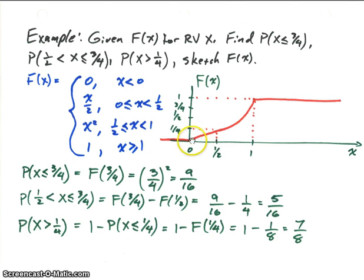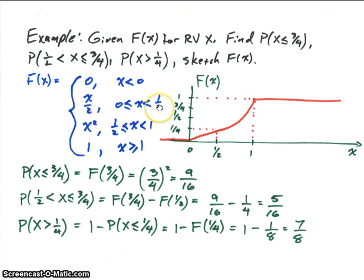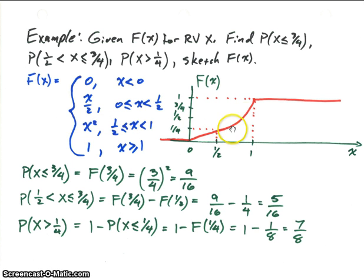Let's plot that — we look at the endpoints. From 0 to 1/2 it should be a straight line, going from 0 to 1/4. Notice that because we're dealing with a continuous random variable and not discrete, we don't have discontinuities. At x = 1/2, the first piece gives 1/4 and the second piece x² also gives 1/4, so they match up — there's a continuous function there with no discontinuities. Then we have an x² curve between 1/2 and 1, and from 1 on it's equal to 1.